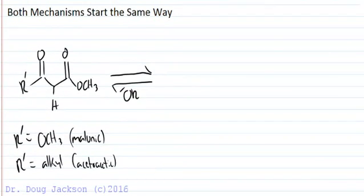What we've got here is an R prime group that I've indicated where if that is an ester group, an OCH3, it's the malonic ester synthesis, and if we have an alkyl group here, it's going to be the acetoacetic. But we can start in the same way mechanistically, we deprotonate to form the enolate.